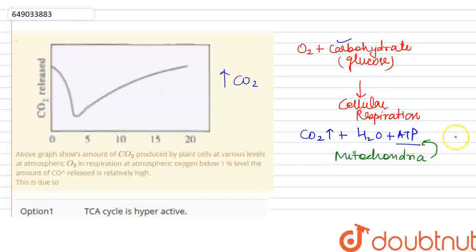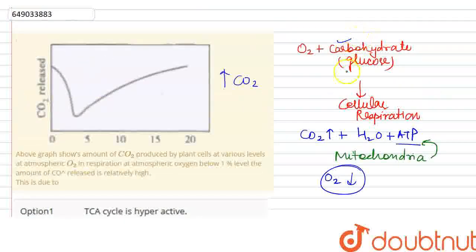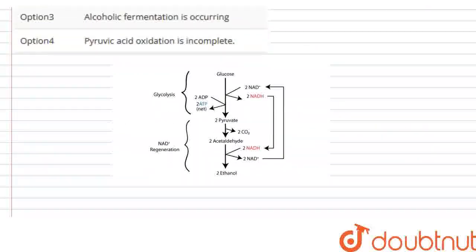In our environment with oxygen, glucose is converted to pyruvate. Pyruvate is then converted by coenzyme A to enter the cycle. Here in the cytoplasm, glycolysis produces pyruvate.